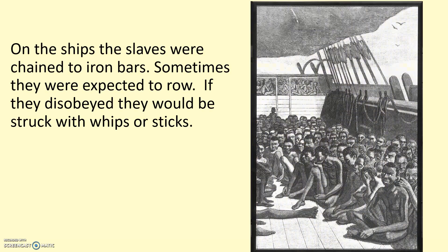On the ships, the conditions are hard to describe and truly appalling. Sometimes they were expected to row the ships as well, depending on the type of ship. If they disobeyed they would be struck with whips or sticks, beaten — sometimes to death. Bodies would just be thrown overboard. They were chained to iron bars in cramped holds beneath the boats, crossing the Atlantic in really hot and horrible conditions.